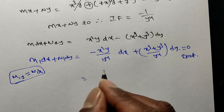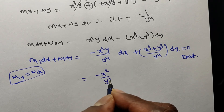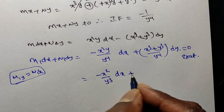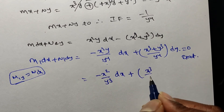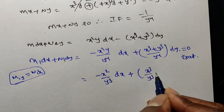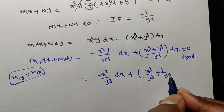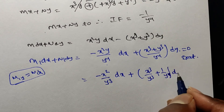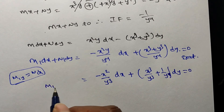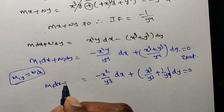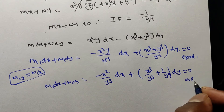Simplifying: the numerator has y and denominator y⁴, so M₁ = x²/y³. For N₁, we split the terms: −x³/y⁴ − y³/y⁴ = −x³/y⁴ − 1/y. So the simplified equation is (x²/y³) dx + (−x³/y⁴ − 1/y) dy = 0, which is M₁ dx + N₁ dy = 0 and is exact.